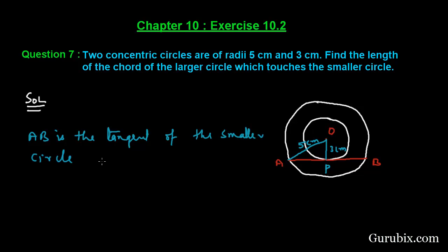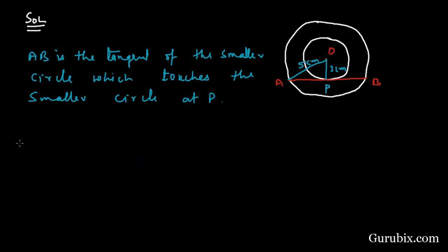Here, AB is the tangent of the smaller circle which touches the smaller circle at P. Therefore, OP is perpendicular to AB.